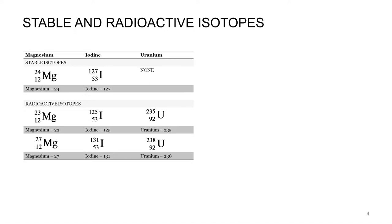But magnesium-23 and magnesium-27 are unstable, so they're eventually going to undergo a nuclear reaction. Iodine-127, stable, good to go, never going to do anything. Iodine-125, 131, are radioactive.